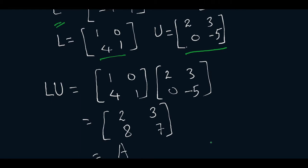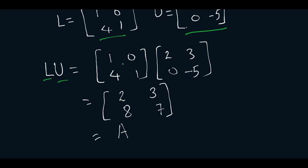Now we will verify whether LU is equal to A. So this is our L into U which is 1, 0, 4, 1 and 2, 3, 0, minus 5.